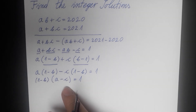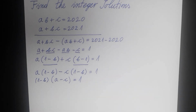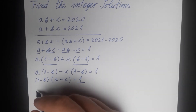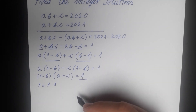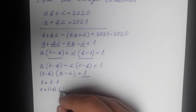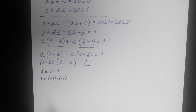In this equation we have two factors: (1 minus b) and (a minus c), and we need to find the integer values for a, b, and c. The question is how many solutions can we have? We have 1 on the right side, and 1 can be written as a product of 1 times 1, or negative 1 times negative 1. So we have two cases to consider.